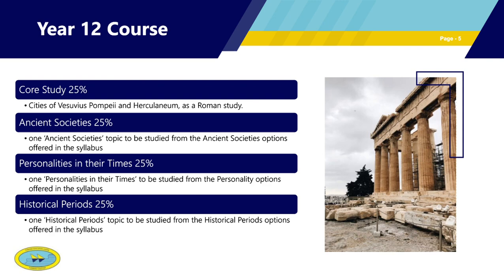The final Year 12 topic is the Historical Period: the Greek World from 500 to 440 BC. That 60-year period was crucial in ancient history. It saw the Greek-Persian Wars — made up of a number of battles, with the Battle of Thermopylae being the most famous — and it also marked the beginning of ideas such as democracy, which will be a major focus of study in that period.